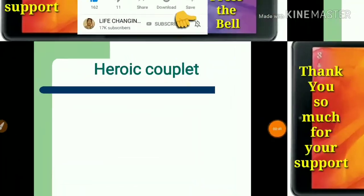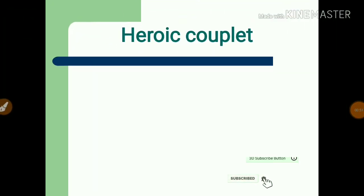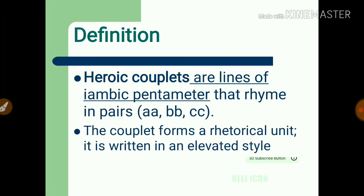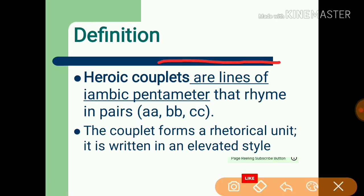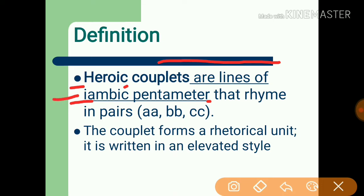Let's start the discussion. Heroic couplets are lines of iambic pentameter that rhyme in pairs: A A B B C C, as you can see here. If you don't know what iambic pentameter is, you can check out our detailed video on iambic pentameter on this channel.